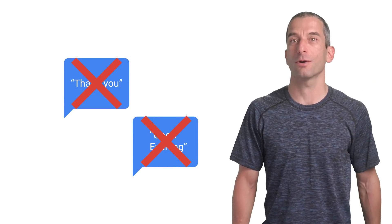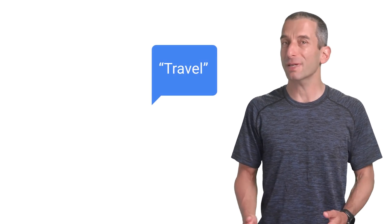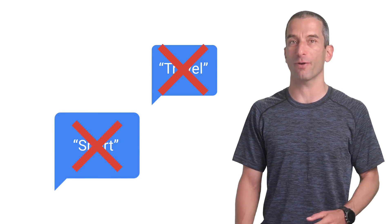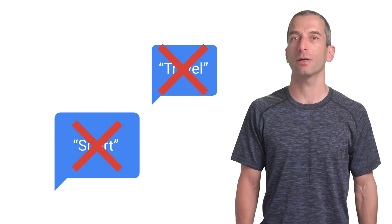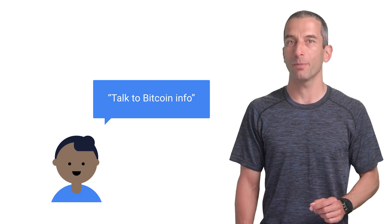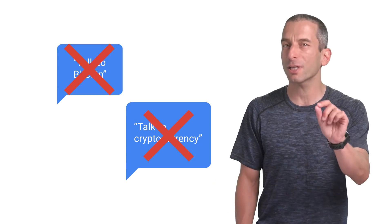Don't use generic words or phrases such as categories of products, services, or content. For example, 'travel' or 'sport.' Think of it this way: if your name can describe a category of apps rather than a specific function, change it to be more specific. Some words and phrases are reserved and cannot be used in names, including: OK, Google, volume, app, down, game, bot, action, and app. For example, 'talk to Bitcoin info' is a good one because it's specific enough. But 'talk to Bitcoin' or 'talk to cryptocurrency' is not good because it's describing a category and not a specific action.